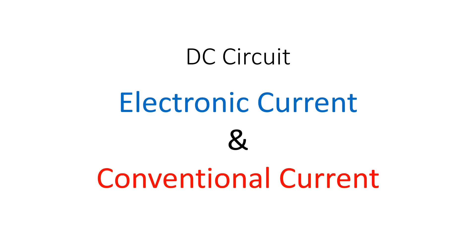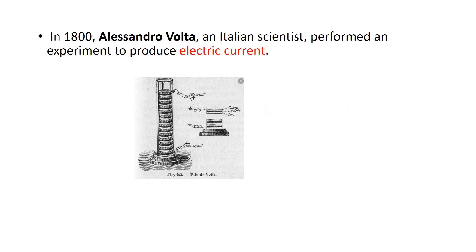In this short video, we will discuss electronic current and conventional current. In the year 1800, Alexander Volta, an Italian scientist, performed an experiment to produce electric current — he made a battery, actually. This is that battery, called Pile de Volta. With the help of this battery, he showed that the current flows between the positive and negative terminals if they are connected.